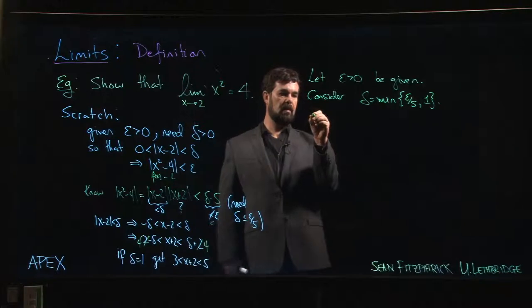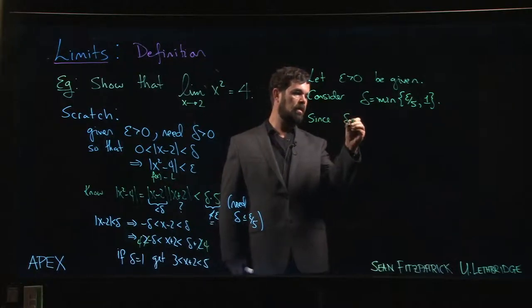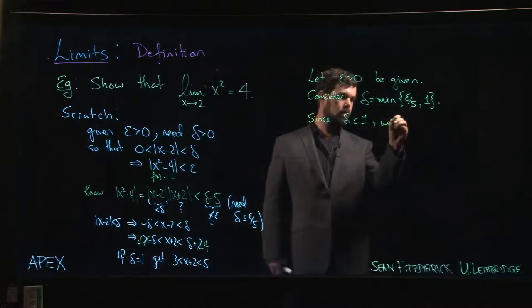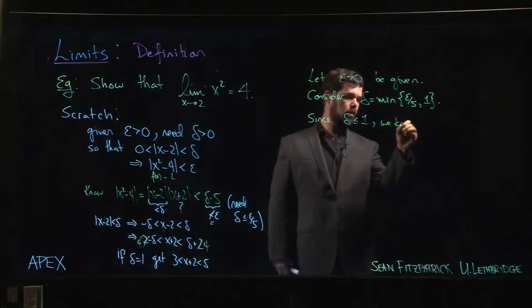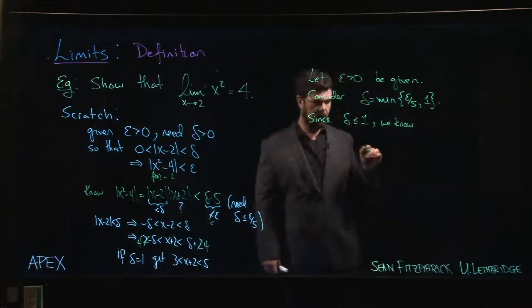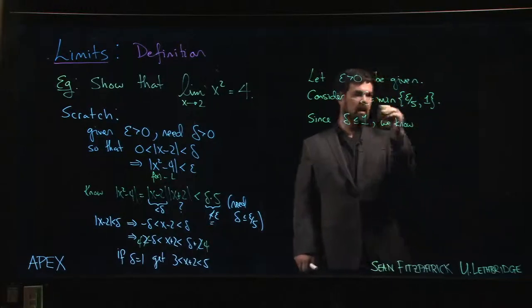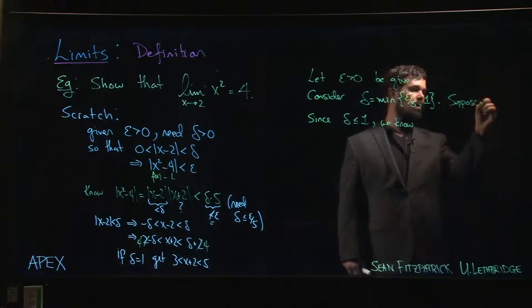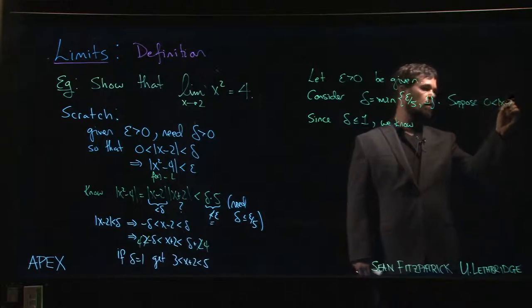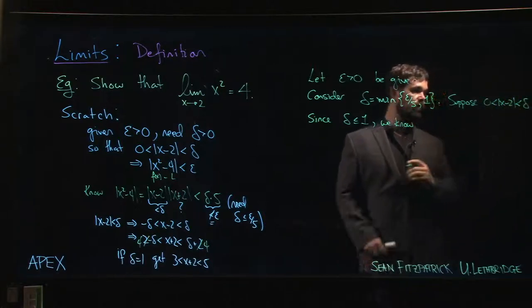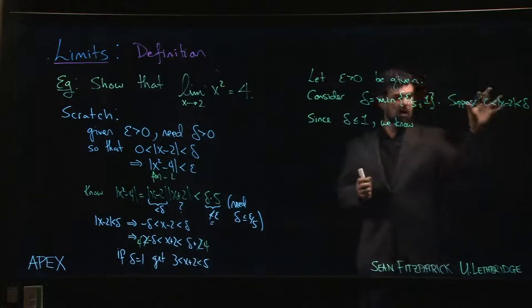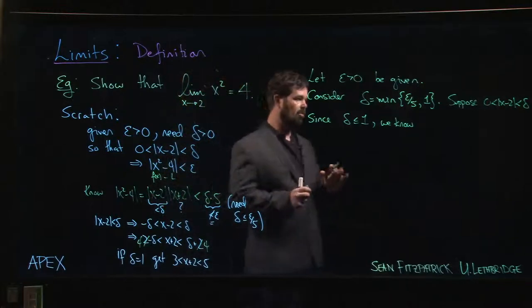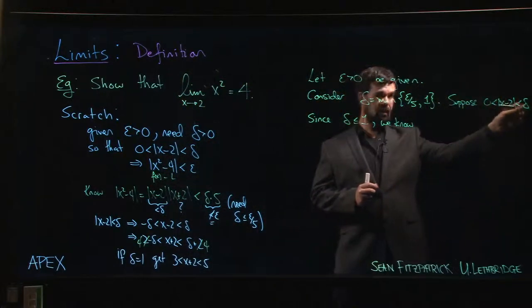So what we can do is we can say that since delta is less than or equal to 1, well, I guess I need one more step. I need to consider this delta. So now let's suppose that the absolute value of x - 2 is at most delta. We want to make this assumption and show that this is our conclusion. So with that assumption, because we're assuming that x - 2 is less than delta in absolute value, and we're assuming that delta is no more than 1,